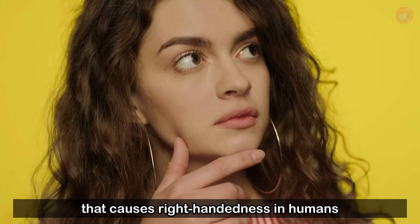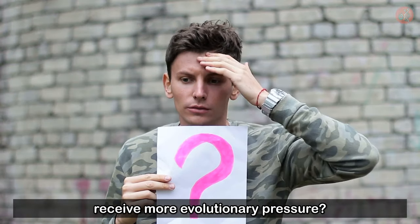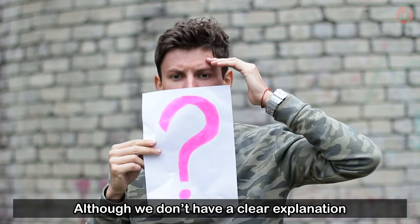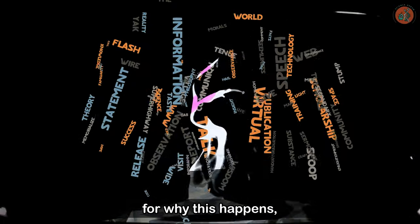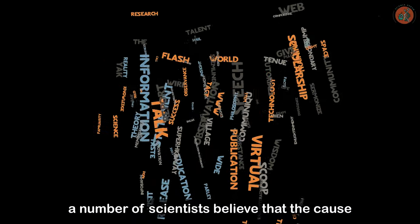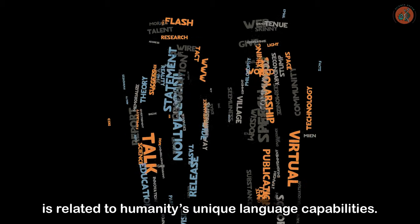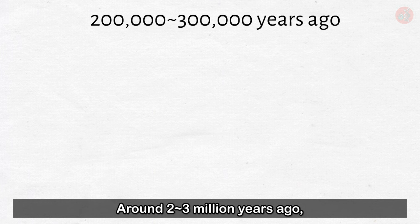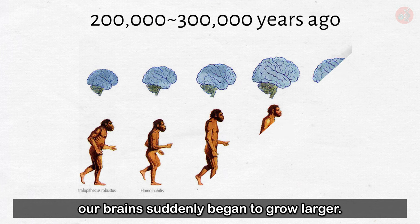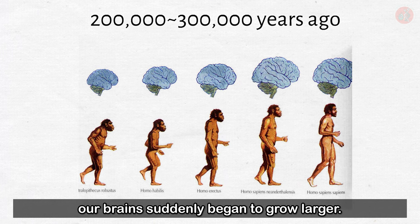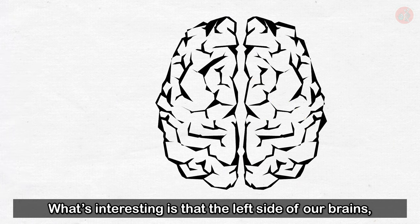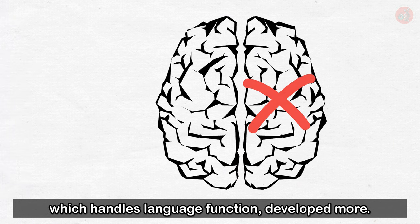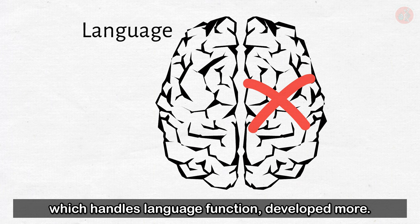But why did the gene that causes right-handedness in humans receive more evolutionary pressure? Although we don't have a clear explanation for why this happens, a number of scientists believe that the cause is related to humanity's unique language capabilities. Around 2 to 3 million years ago, our brains suddenly began to grow larger. What's interesting is that the left side of our brains, which handles language function, developed more.